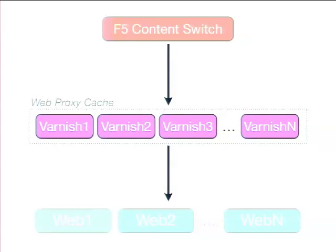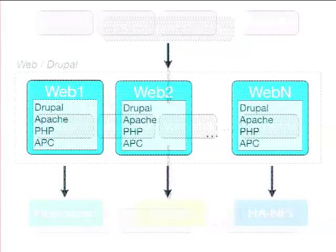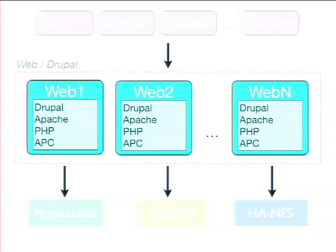That web proxy cache layer — Varnish — is simply about speed: the ability to cache pages in RAM. In our production environment, we currently have four Varnish nodes. As at least one expert in our audience will tell you, we probably don't need four yet, but we've got four — we're in a 'more is better' mode and may scale some of those down. After the Varnish layer, we've got the Drupal web layer. Added to that is our APC cache, which caches PHP bytecode to speed things up.